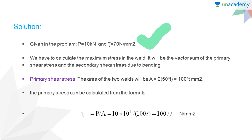We have to calculate the maximum shear stress in the weld, which will be the vector sum of the primary shear stress due to the shear load acting at the weld part and the secondary shear stress due to the bending acting at the weld part. Before proceeding, you should go through the last lecture where I presented the calculation of stresses at the weld part of a cantilever beam.